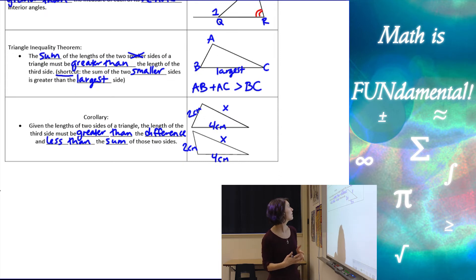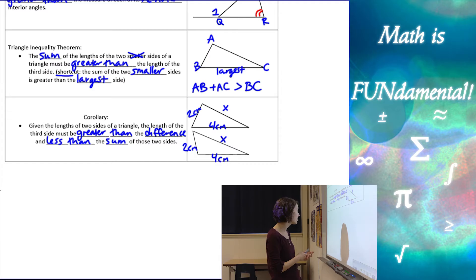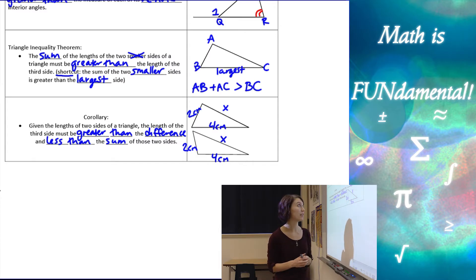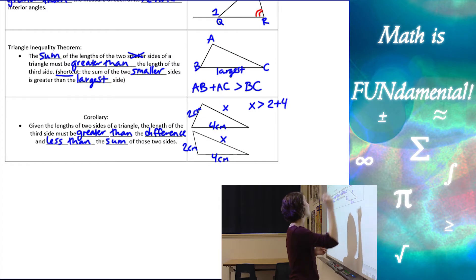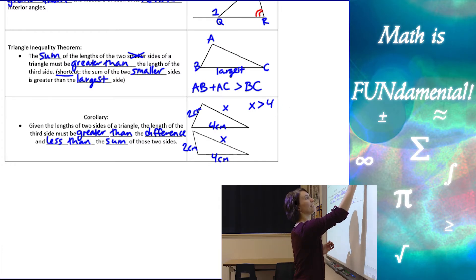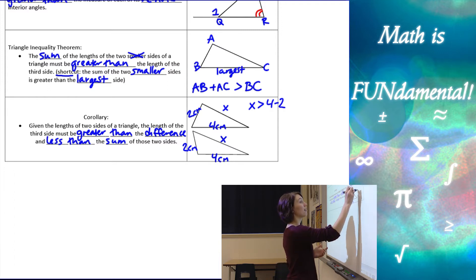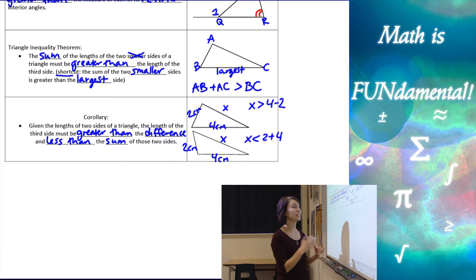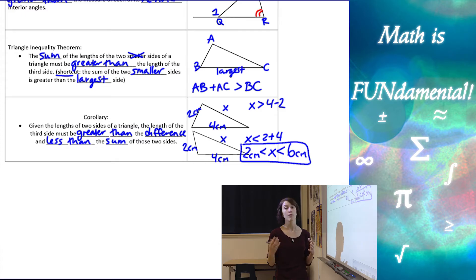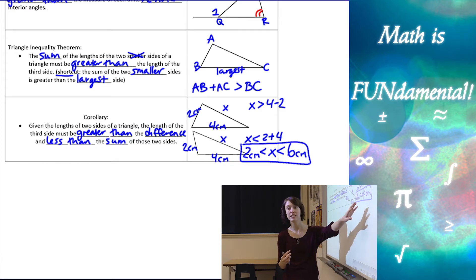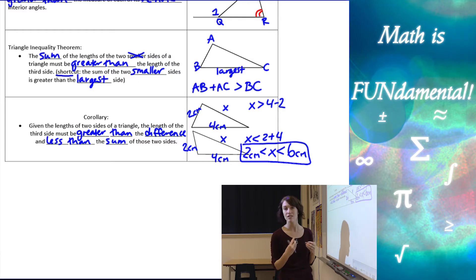We also have a corollary from the triangle inequality theorem, which says: given the lengths of two sides of a triangle, the length of the third side has to be greater than the difference and less than the sum of the two sides. So if we're given two centimeters and four centimeters, X has to be greater than four minus two (the difference) but less than two plus four (the sum). So X must be greater than two centimeters but less than six centimeters for this to form an actual triangle.